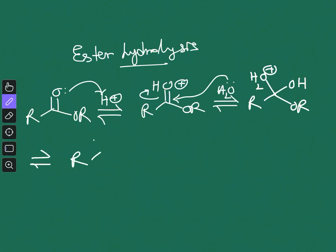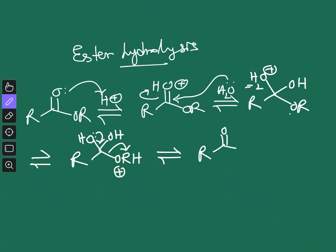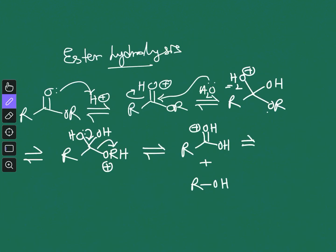On this intermediate, proton exchange occurs to give OH, OH, and ORH⁺ — the proton moves to the OR oxygen, placing a positive charge there. One of the OH groups then pushes its electrons, expelling the OR group, which gives a protonated acid form and returns the alcohol. Simple deprotonation then gives the carboxylic acid product.